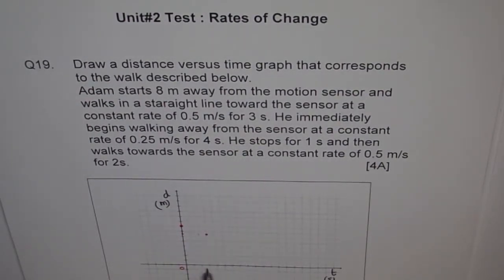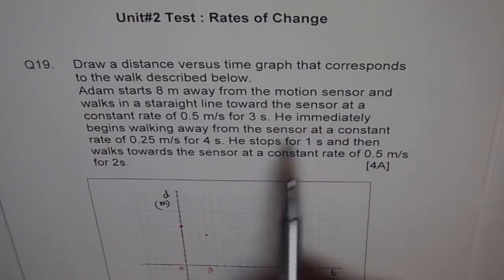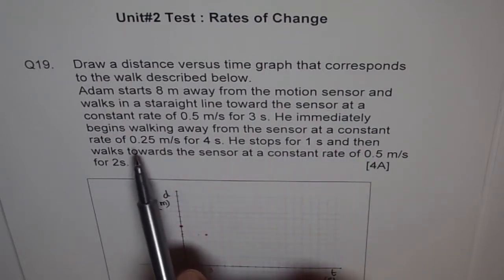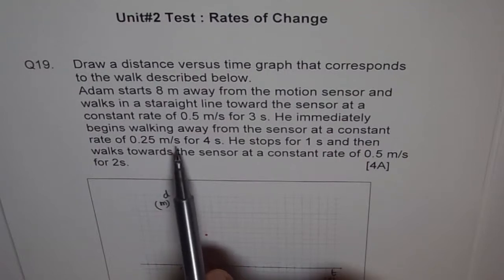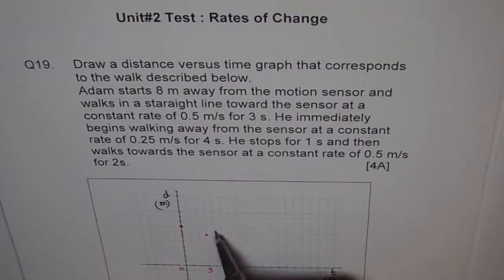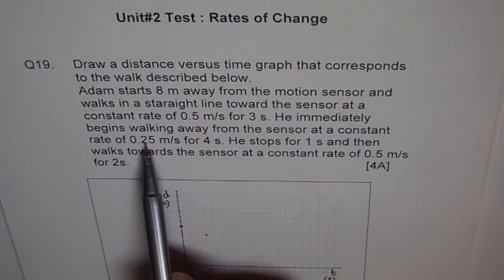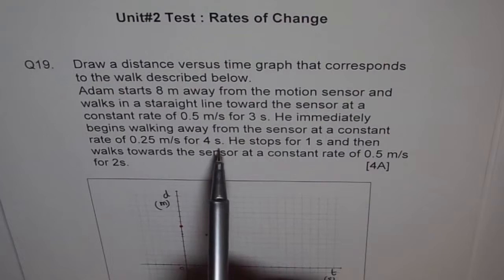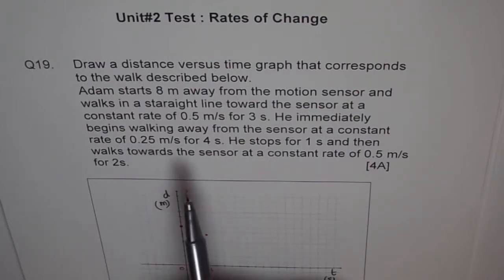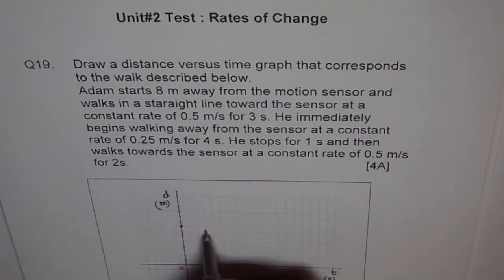So this is our 3 seconds. So after 3 seconds, Adam comes closer by 1.5 meters. Now he immediately begins walking away from the sensor at a constant rate of 0.25 meters per second for 4 seconds. So walking away means the distance will increase.